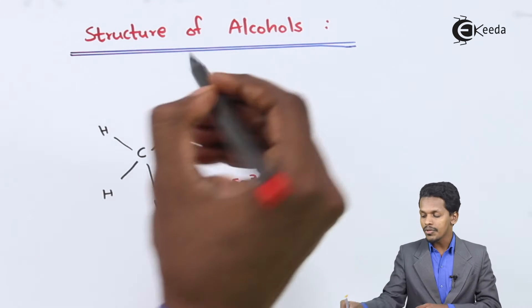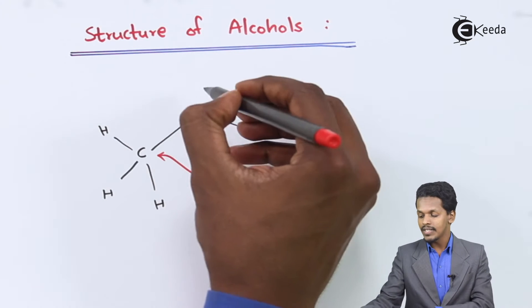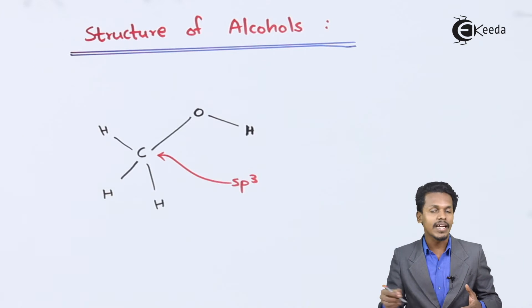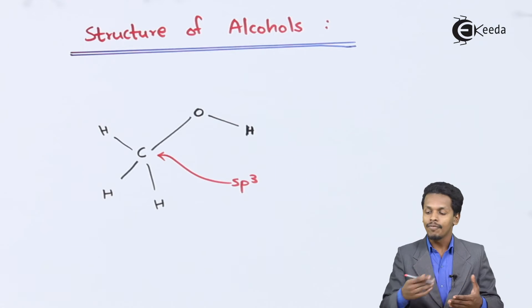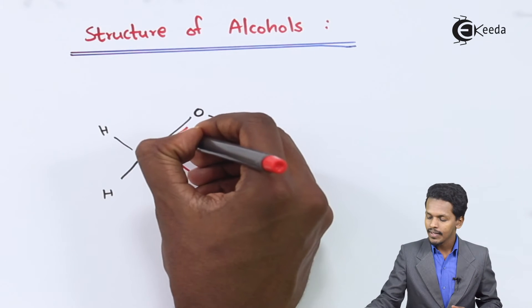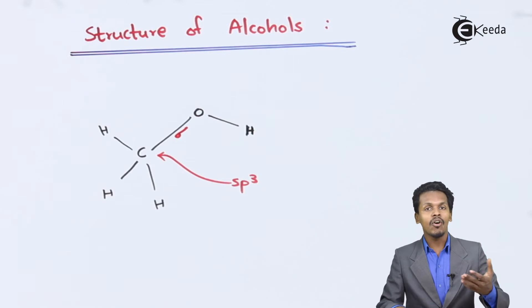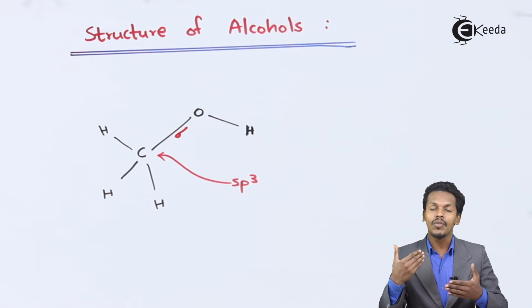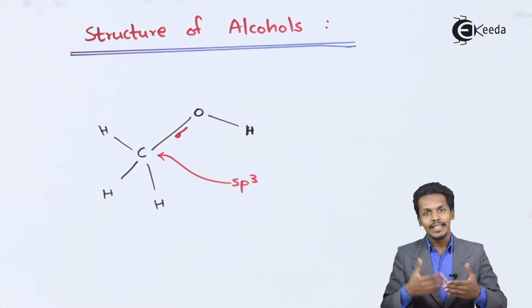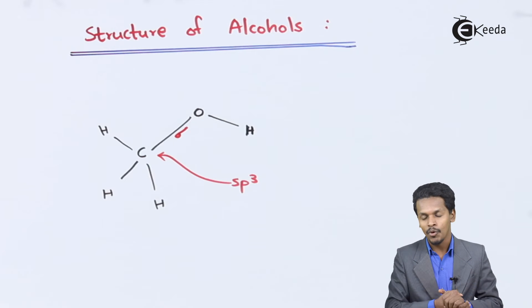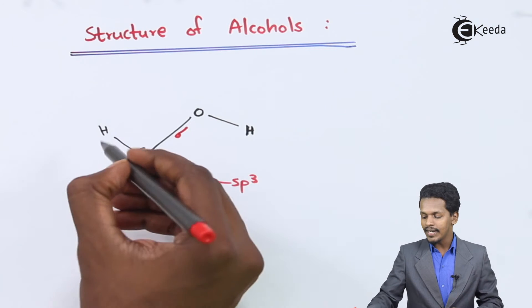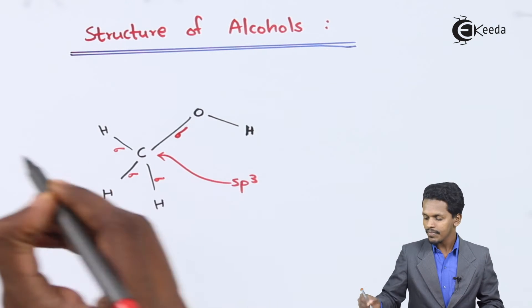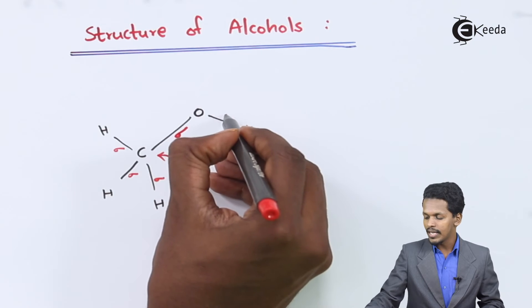Not only the carbon atom but also the oxygen atom is SP3-hybridized, and that is the reason that whenever the carbon atom and this oxygen atom form a bond, they form a sigma bond. The overlapping of the SP3-hybrid orbitals of carbon and the SP3-hybrid orbitals of oxygen means they overlap to form a strong sigma bond. There are also sigma bonds between carbon and hydrogen.